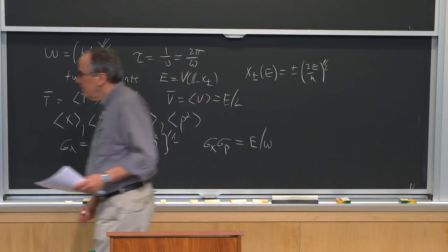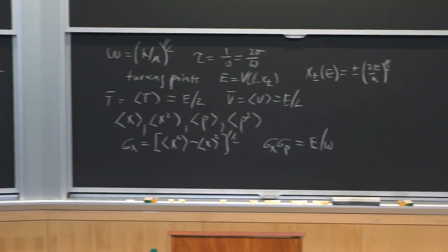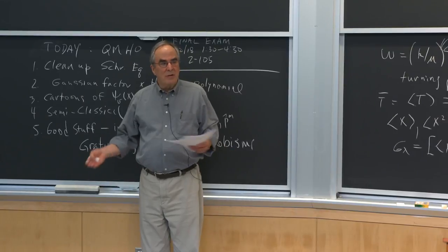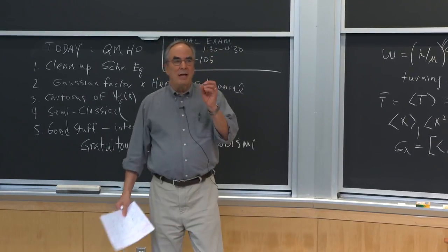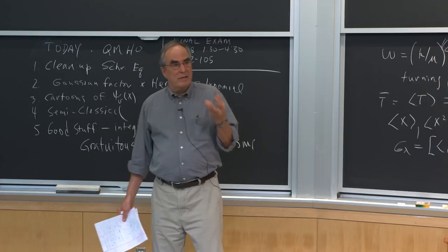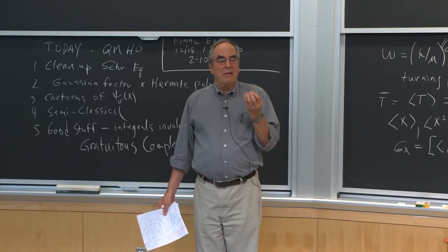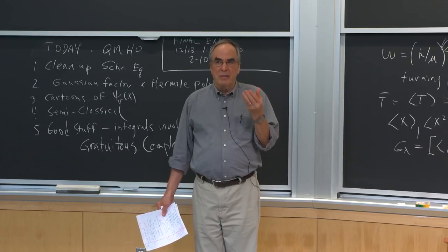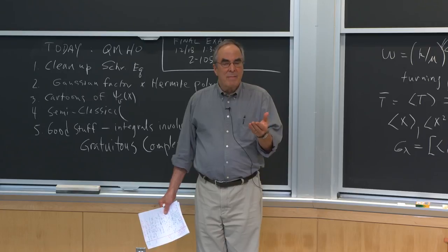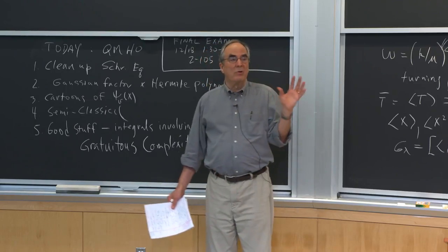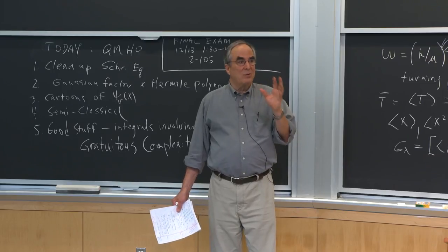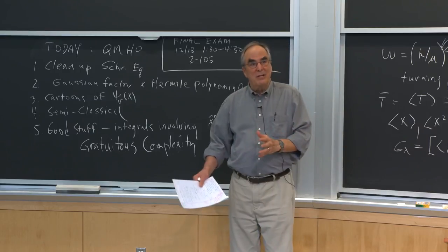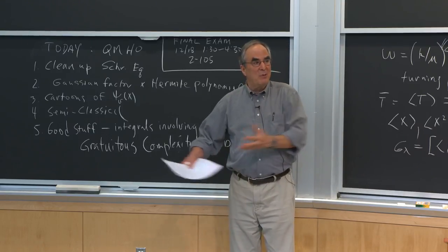I'm going to write the Schrödinger equation and clean it up to get rid of units, making it universal — a dimensionless equation. The unit removal takes you from a specific problem with a particular force constant and reduced mass to a general problem. There are one or two constants that combine those things, and you take them out. At the end, if you need real units, you can put them back in.